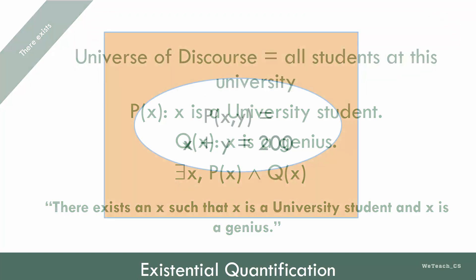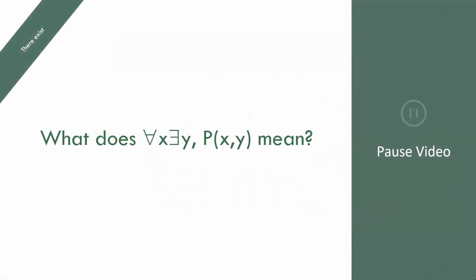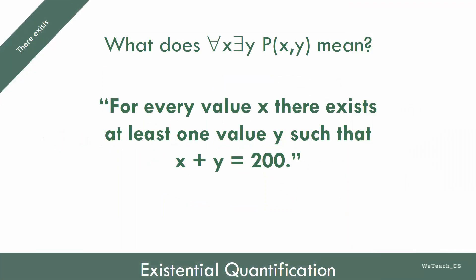Let's take another example. Let's say that the universe of discourse is all real numbers. What does this statement mean? Pause the video for a moment and try to translate this statement. Did you get it?